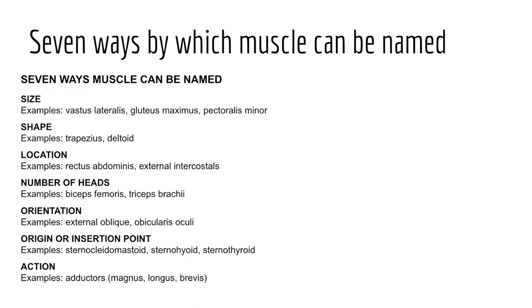Fifth, muscles may be named by muscle orientation, or the direction by which muscle fibers run — examples include rectus (meaning straight), transverse (meaning across), oblique (meaning diagonal), or orbicularis (meaning circular). Muscles can also be named based on their origin or insertion point; we see this with some regularity within the neck muscles, including the sternocleidomastoid with an origin on the sternum and clavicle and insertion on the mastoid process. Other examples include the sternohyoid, sternothyroid, and thyrohyoid.